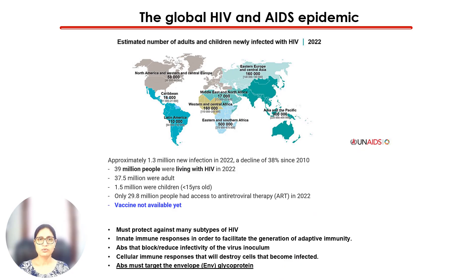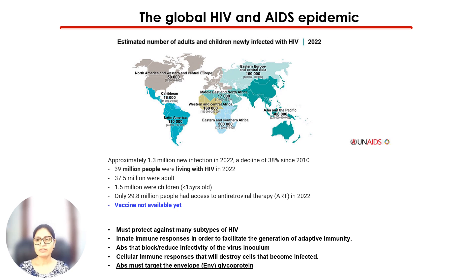This slide shows the geographical distribution of new HIV-1 infections as of 2022, which represents a 38% reduction since 2010, but still 39 million people are living with HIV-1. The efforts to develop an HIV-1 vaccine have not come to fruition yet. Several factors are responsible for this, but the common theme is that protective antibodies elicited by any vaccine must target the envelope glycoprotein.